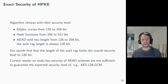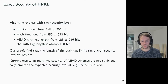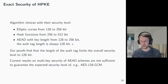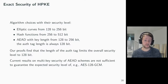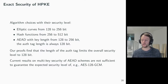Putting all these pieces together, we can look at the exact security of the HPKE scheme in the standard. The standard offers algorithm choices with different security levels for the elliptic curves, the hash functions, and the symmetric encryption. Here it is noteworthy that while different key sizes are offered for the symmetric key, the length of the authentication tag is always fixed at 128 bits. In our proofs, we find that this indeed limits the overall security level of HPKE to a maximum of 128 bits, regardless of whether an elliptic curve or a hash function with a higher security level has been chosen. Also, current results on multi-key security of AEAD schemes like AES-128-GCM are not sufficient to actually guarantee the security level of 128 bits; there is more research needed on this front.